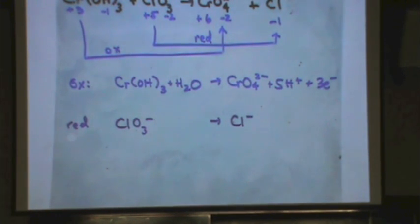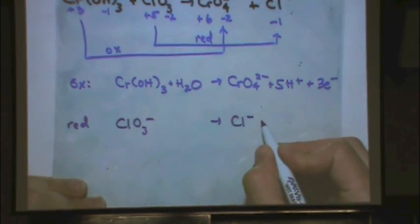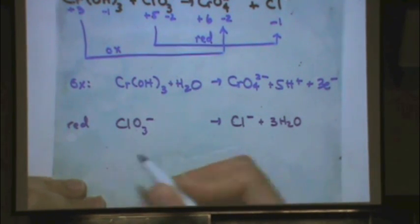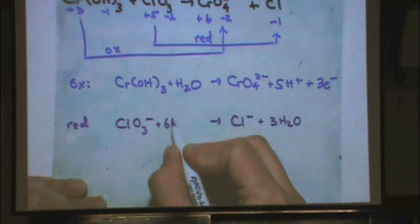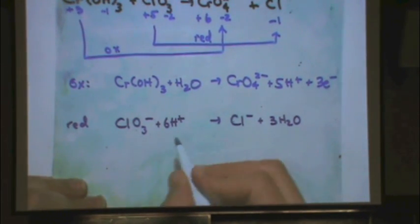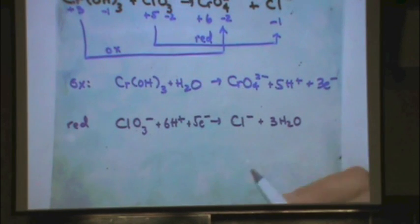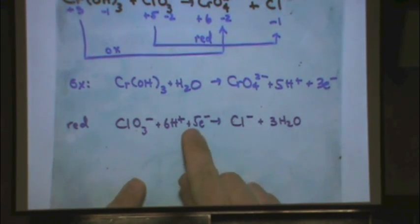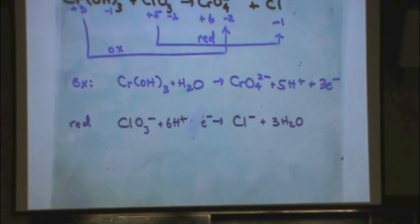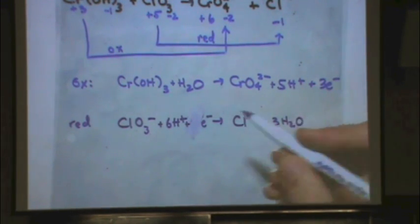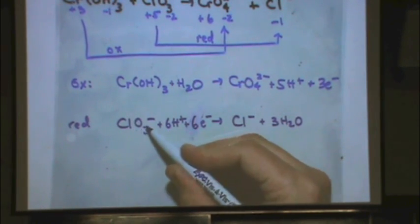Now the reduction half reaction. Step 1: balance chlorine — one on each side. Step 2: balance the 3 oxygens with 3 waters. Step 3: balance the hydrogen — there are 6, so I need 6 H⁺. Step 4: balance the charge. Minus 1 on the right, plus 5 on the left. I get 6 electrons on the left to give a net of minus 1 on each side. The charges cancel to minus 1 on each side.